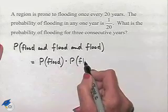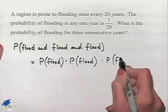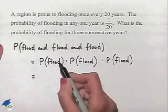of having a flood the second year, multiplied times the probability of having a flood the third year. Now each of these events are independent, so therefore